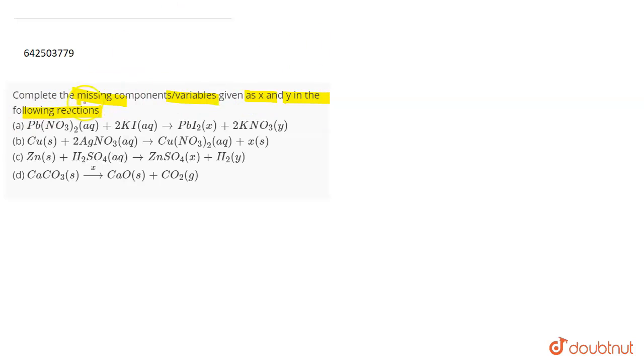If we talk about the first reaction, it is Pb(NO3)2 aqueous plus KI aqueous giving PbI2 X and KNO3 Y. So PbI2 is a solid, so X will be S in this case which represents that it is a solid. Talking about KNO3, then KNO3 is an aqueous solution. So Y will be AQ which means aqueous.